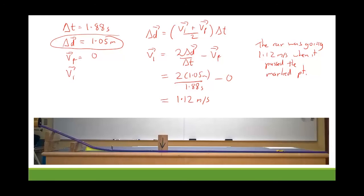Instead of saying D equals, why not say the displacement from the marked point to where the car stops is 1.05 meters. And it's perfectly clear to the person reading your work what you measured.